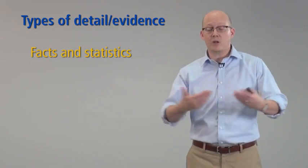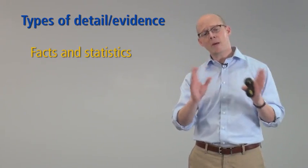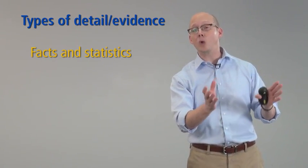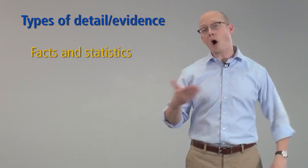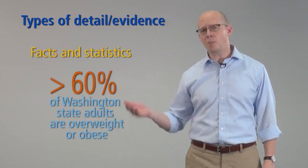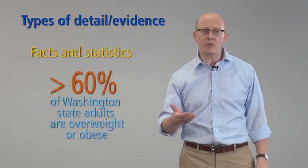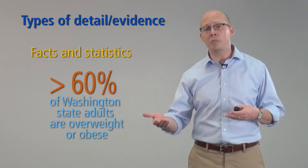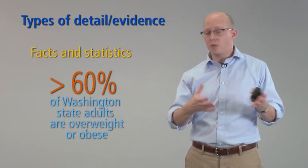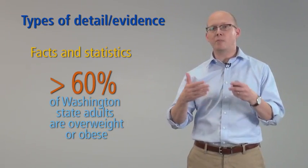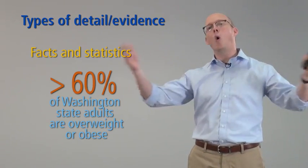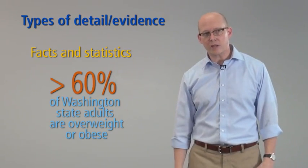A statistic is basically a numerical representation of fact. So if I'm doing the speech in front of a Washington audience and I want to provide a greater sense of locality, I might say: the Washington State Board of Health reports that over 60% of Washington adults are either overweight or obese. That's a statistic — it gives people a sense of where obesity sits within the larger whole of this particular state.